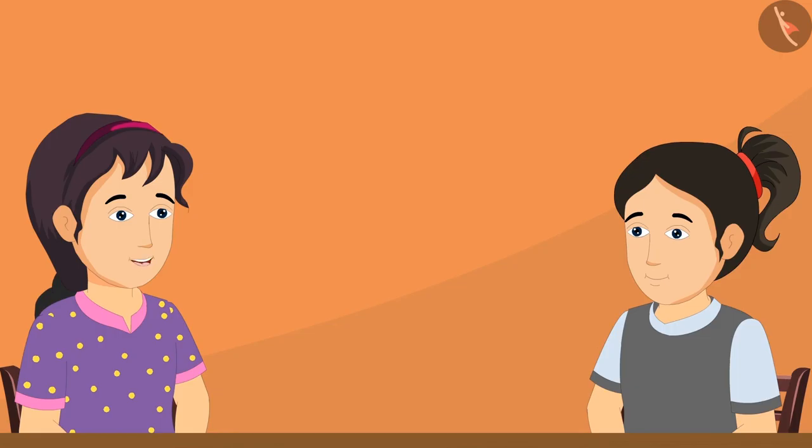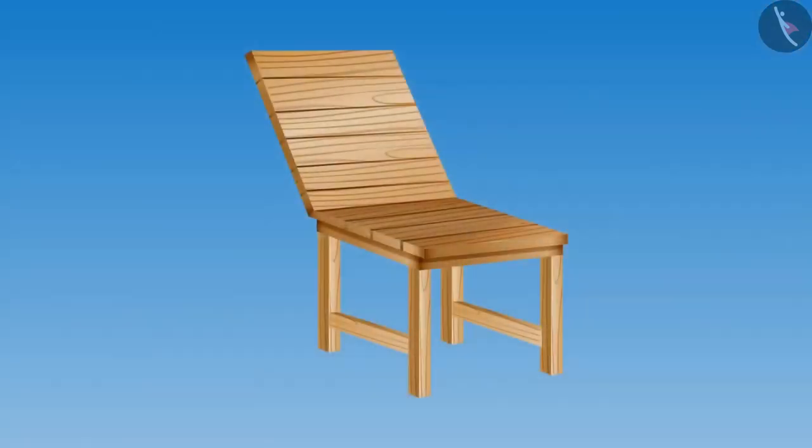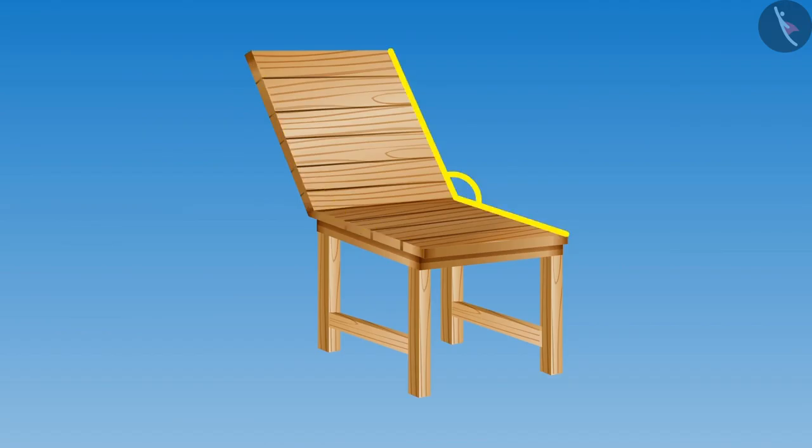Now we have just one more angle left to find. Come on, Riva, let us find an angle greater than a right angle. Deeti, I have already found it. Look at that chair — some of its corners are making angles more than a right angle, like this one and this one.